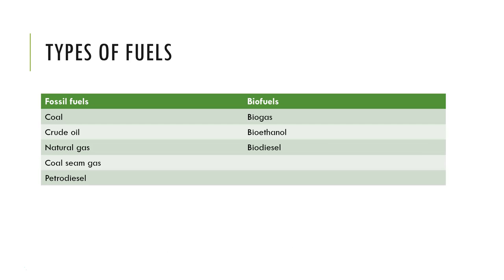When we look at types of fuels, we break them down into fossil fuels or biofuels. Fossil fuels cover coal, crude oil, natural gas, coal seam gas, and petrodiesel — these are all extracted from the earth from large reserves of old materials. Biofuels — biogas, bioethanol, and biodiesel — are made from more easily replenishable biological materials. You need to be able to classify any fuel you discuss as either a fossil fuel or a biofuel.